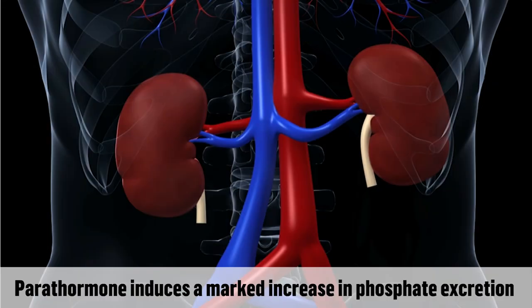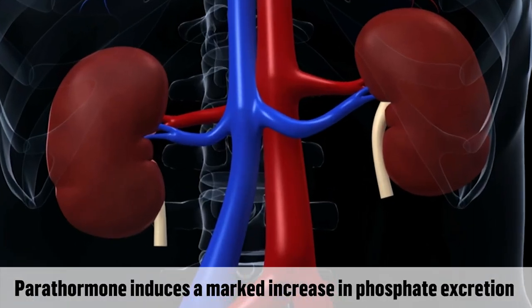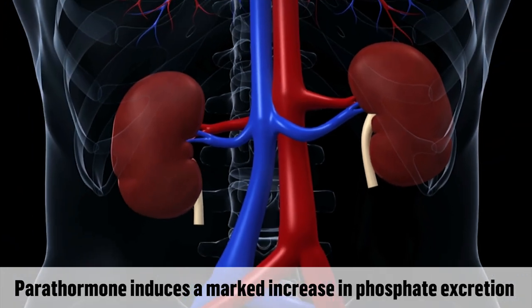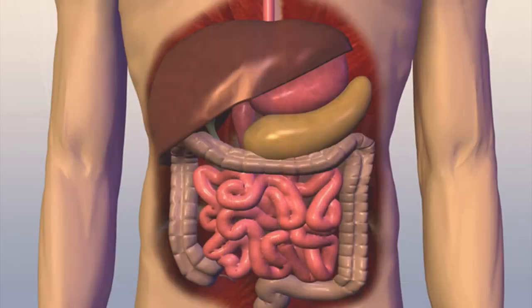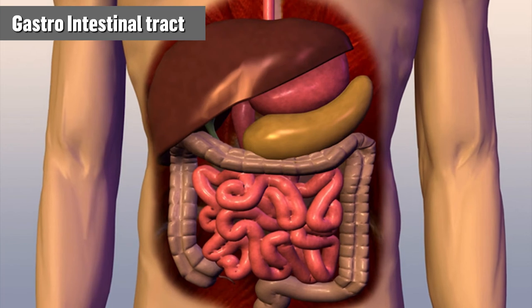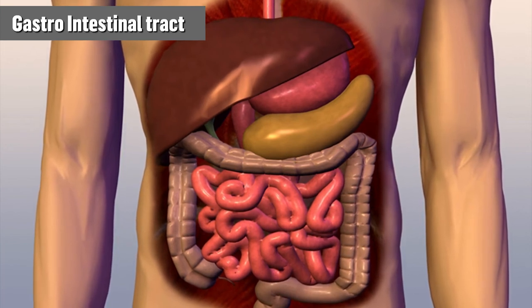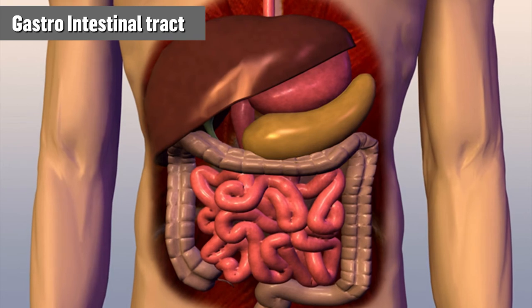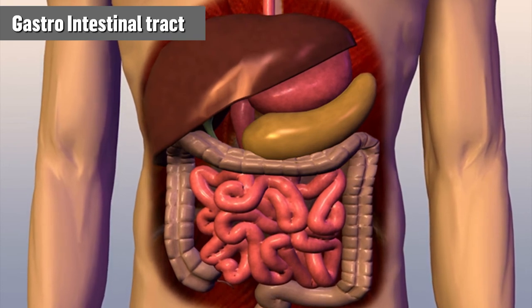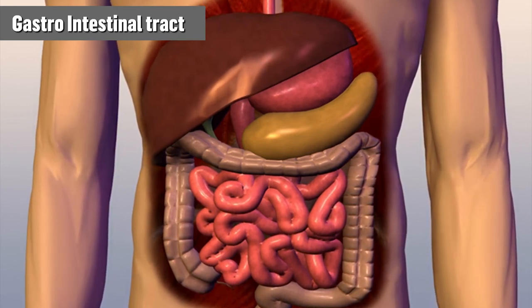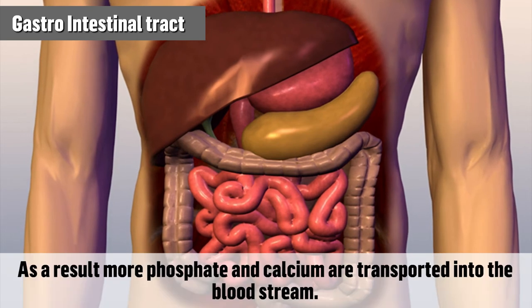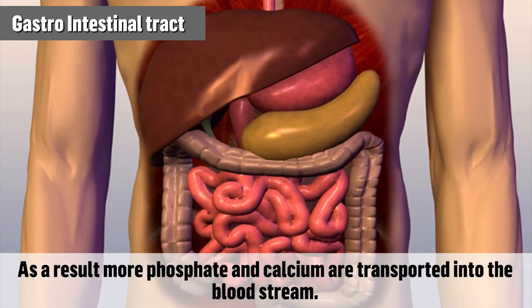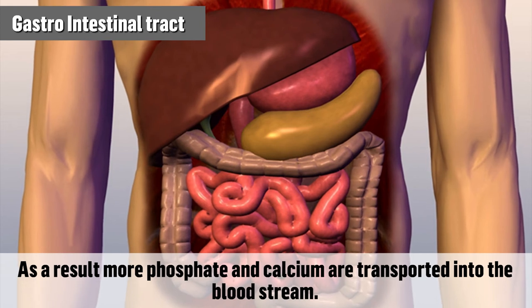In the kidney, parathormone induces a marked increase in phosphate excretion. In the gastrointestinal tract, parathormone stimulates the absorption of calcium and phosphate from the gut by enhancing vitamin D synthesis. As a result, more phosphate and calcium are transported into the bloodstream.